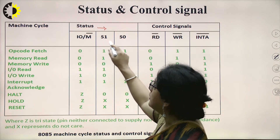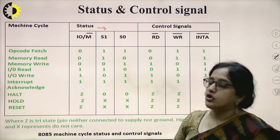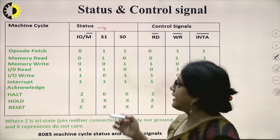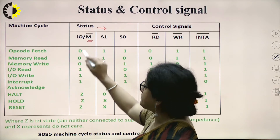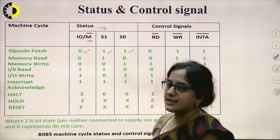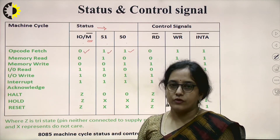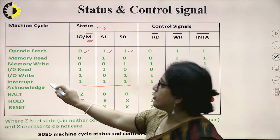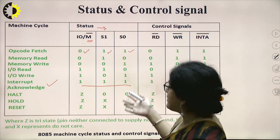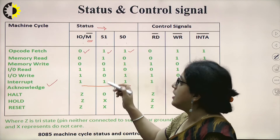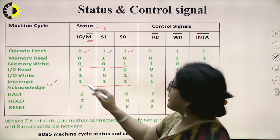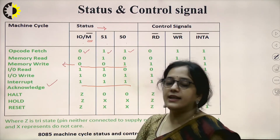These are output signals generated from the microprocessor. Whenever the microprocessor is going to fetch an opcode from memory, the IO/M̄ pin is 0, S1 is 1, and S0 is 1. So 011 indicates that the microprocessor is performing opcode fetch. A RD̄ signal active indicates that the microprocessor is going to perform an interrupt acknowledgement cycle. Whenever we see these status signals, we can predict which operation the microprocessor is going to perform. For example, if we read 001 on these three pins, we predict that the microprocessor is writing data into memory.